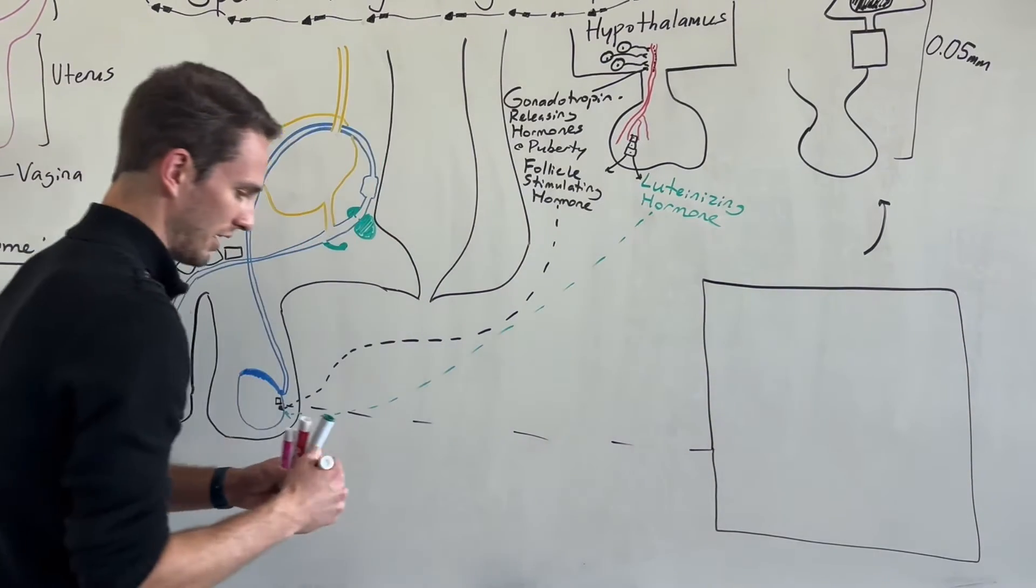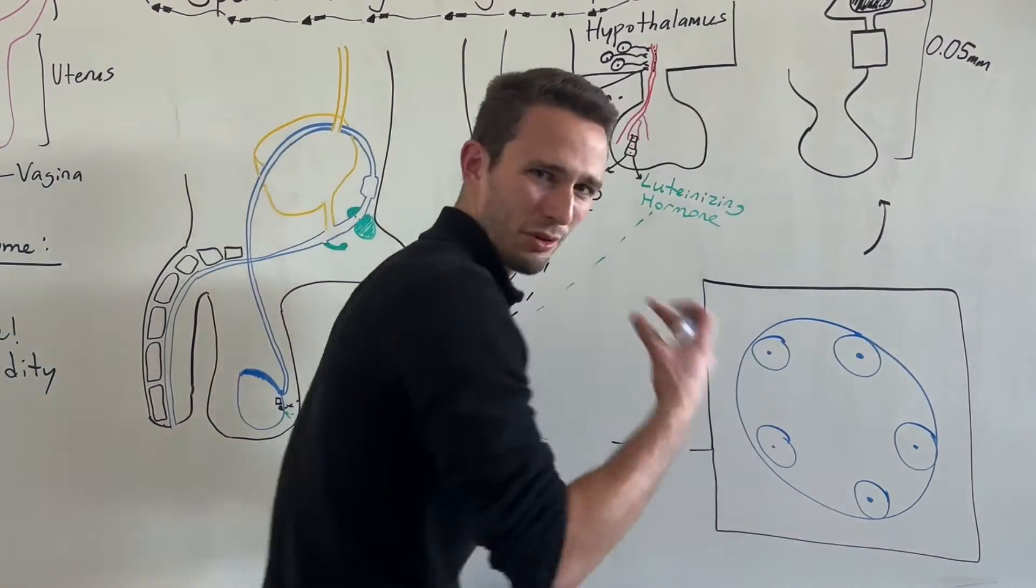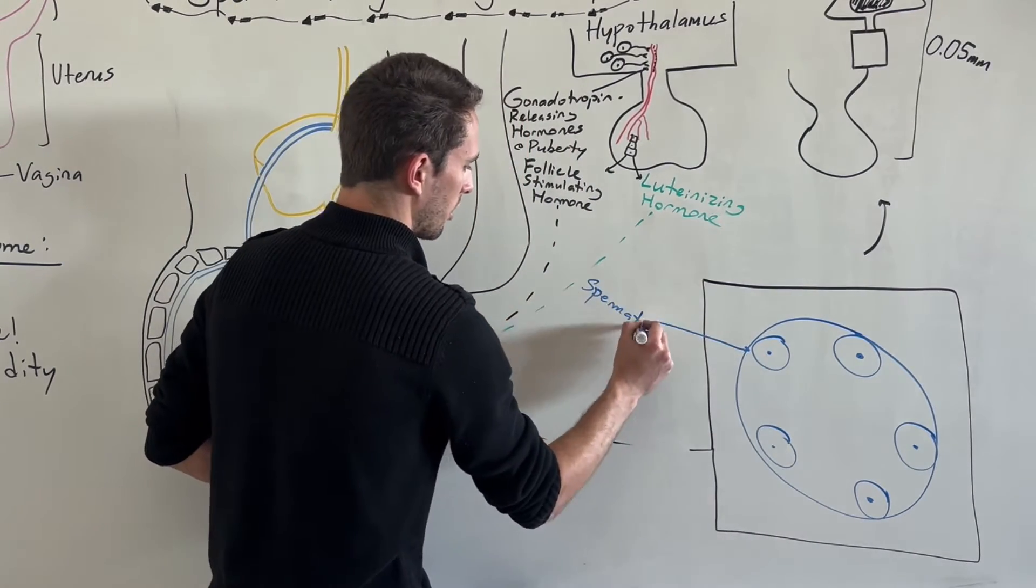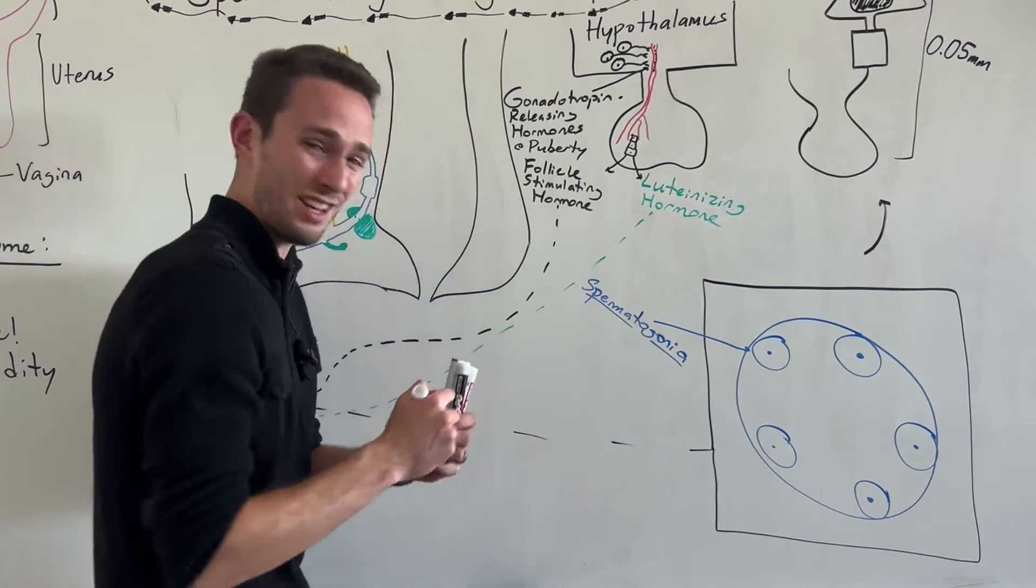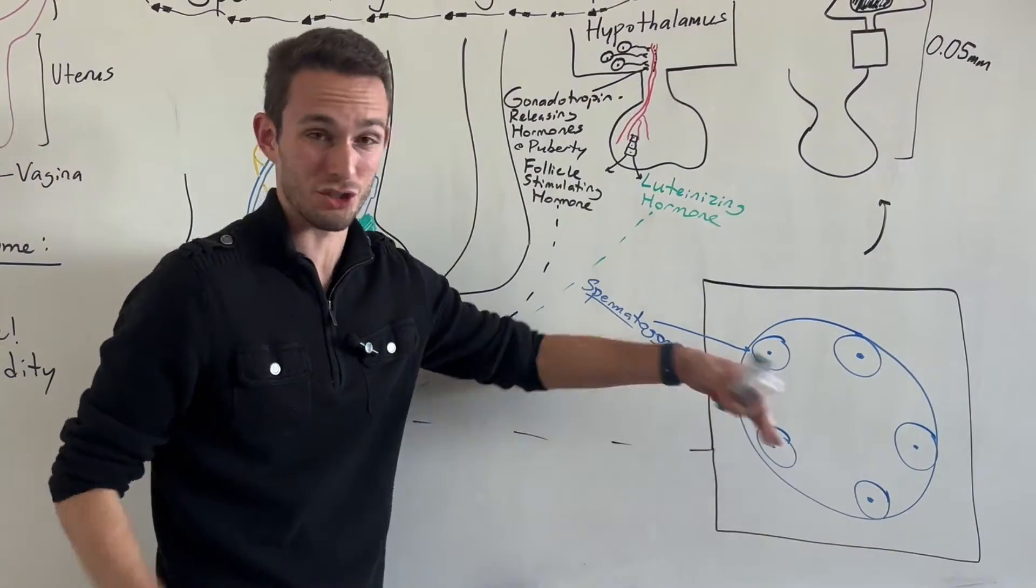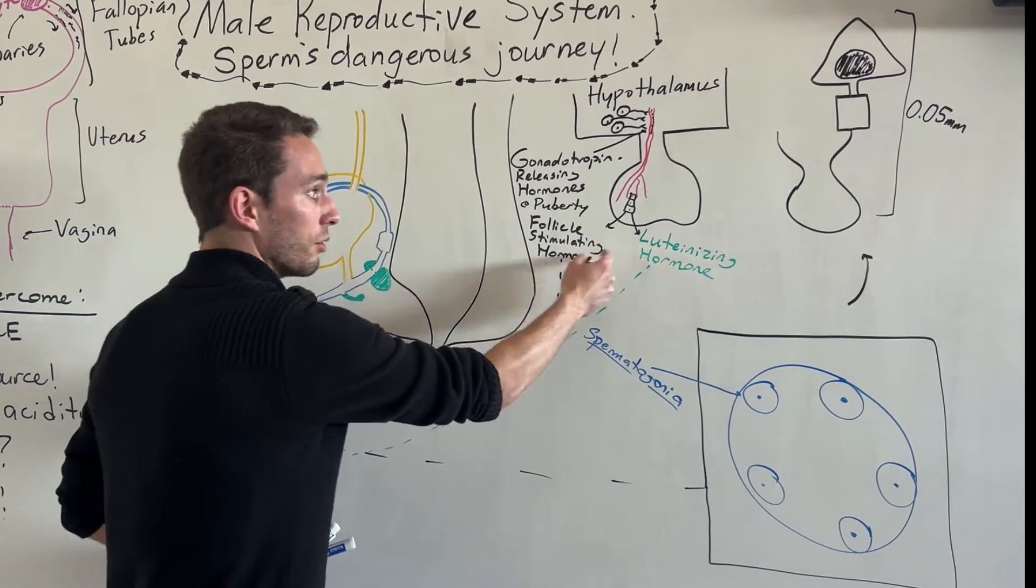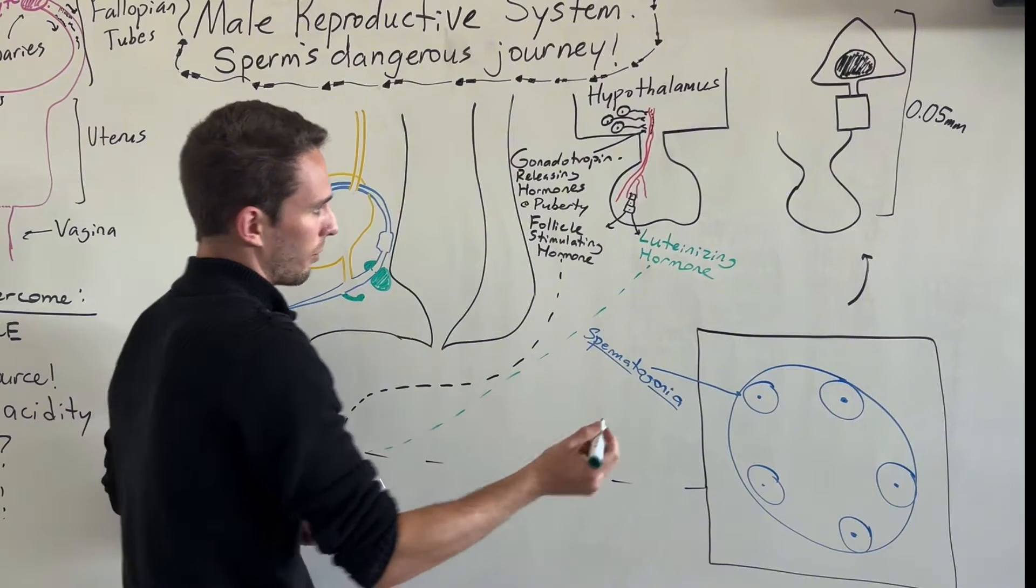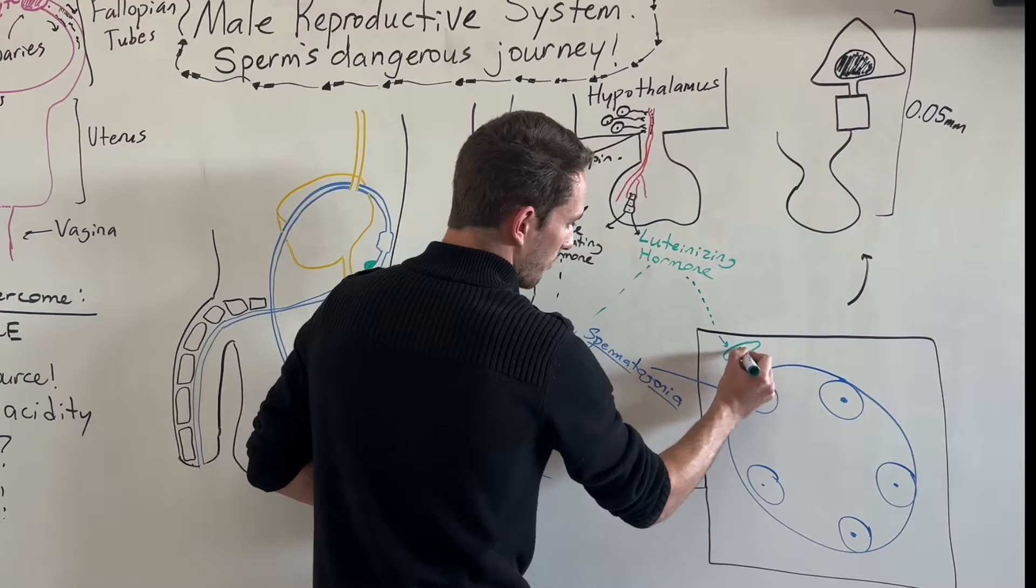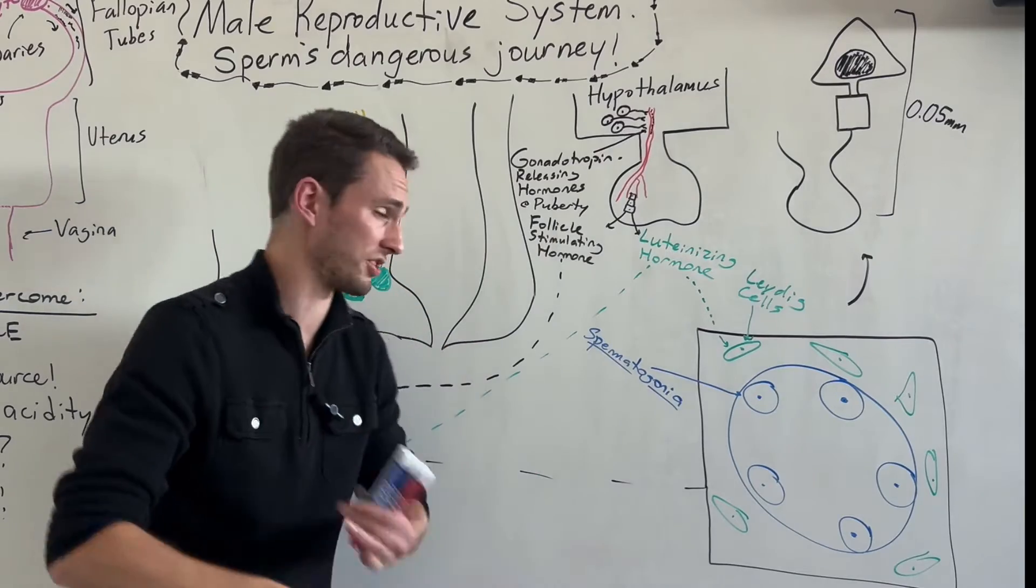These hormones are going to travel down to the sperm producing organ called the testes, and they're going to start stimulating spermatogenesis, which is basically the production of sperm. If I were to take a cross section of the testes here and look inside of them in what's called the seminiferous tubules, I would first see these relatively normal looking cells, and these are called spermatogonia. This literally means baby sperm, and they don't look capable of actually moving up to that area. They're just little round balls.